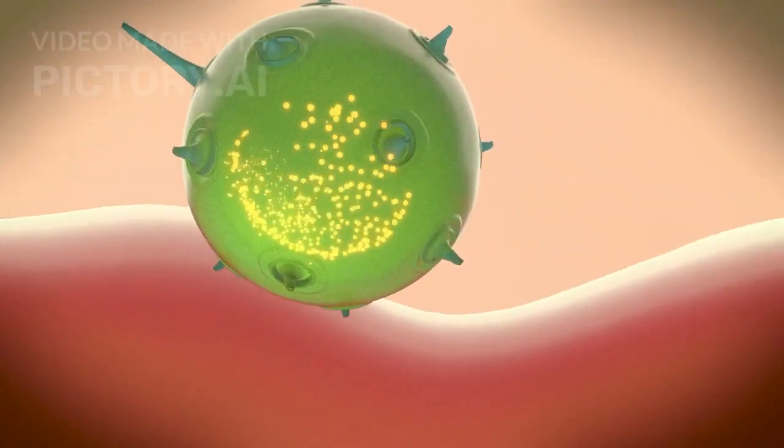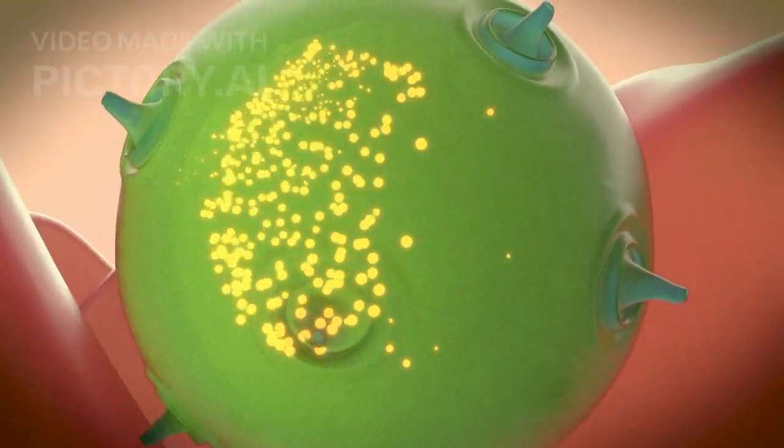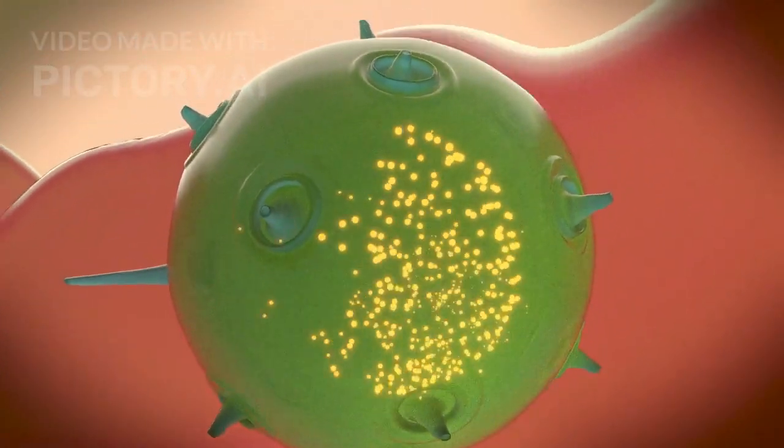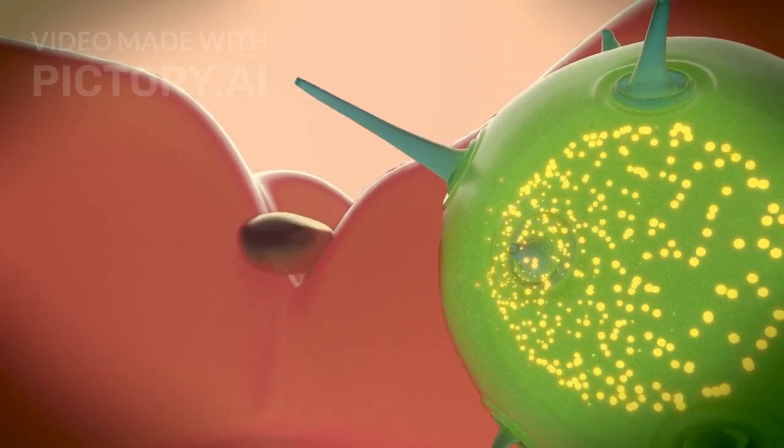Agranulocytes include lymphocytes. These form about 20-25% of WBCs and are responsible for immune responses. They include B-lymphocytes, which produce antibodies, and T-lymphocytes, which help destroy infected cells.